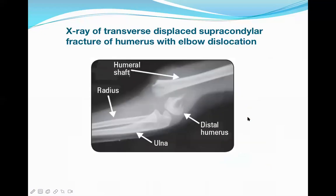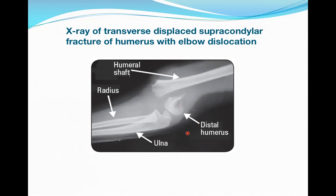On X-ray, you can clearly see the distal fragment and proximal fragment of the fracture, with the shaft of the humerus visible. In some cases, there may also be an associated dislocation of the elbow — another important traumatic condition which will be discussed after completing this fracture topic.